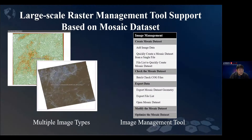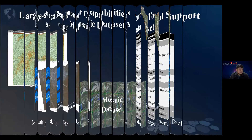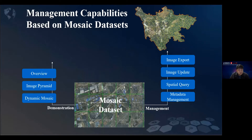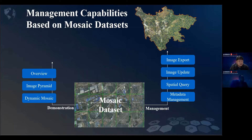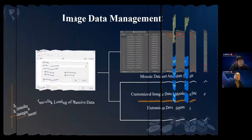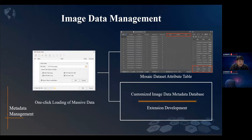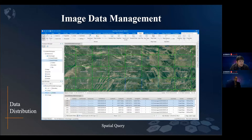The image data management functions based on mosaic data sites include creation, inspection, export, modification, and optimization. After the mosaic data site is created, in terms of display we can use overview, image pyramid, and dynamic mosaic to improve rendering performance. In terms of management, we provide image export, image update, spatial query, and metadata management — such as adding new image data and browsing attribute tables. The distribution of image data is based on spatial query: we can draw a bounding box or polygon to query specific data and find the path on the local disk. It also supports updating paths, adding, deleting, and updating images.